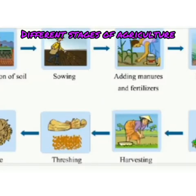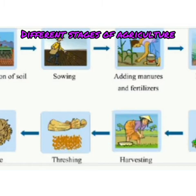Different stages of agriculture: farmers have to work very hard through various stages of agriculture. The first stage is ploughing. Ploughing is the act of turning the soil to loosen it. It helps in the circulation of air in the soil.